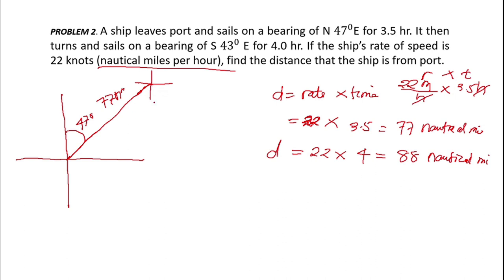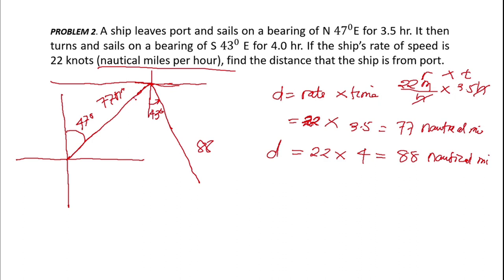By alternate interior angles, the 47-degree angle at the turning point transfers to the triangle. So naming the vertices A, C, and B, where A is the port and B is the final ship position, the angle at C between the two legs can be analyzed. Since 47 plus 43 equals 90 degrees, this is a right angle.